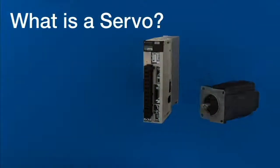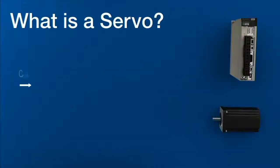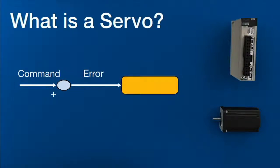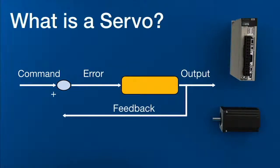Here's a basic definition of a servo. It's a device that produces motion in response to a command, then regulates the speed and direction of that motion in response to feedback.